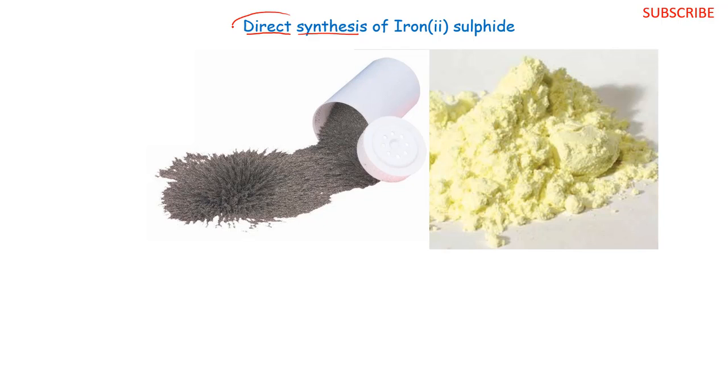As the name suggests, direct synthesis, that means we are going to directly combine two substances to form the product that we want, which is iron sulfide. So what do we need? We shall obviously need our iron and we shall need sulfur to provide this sulfide portion.